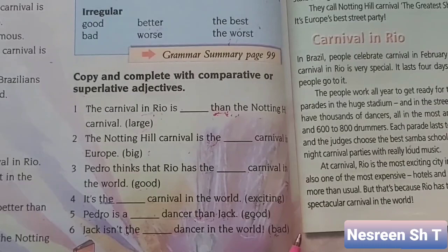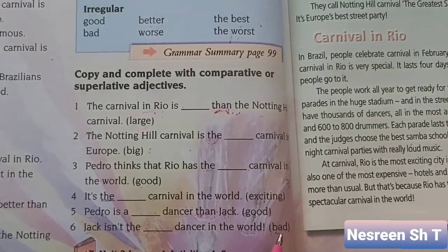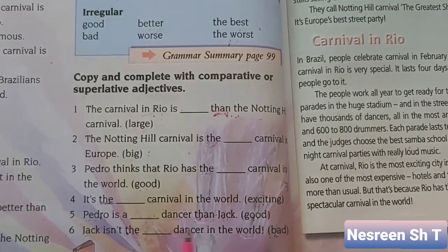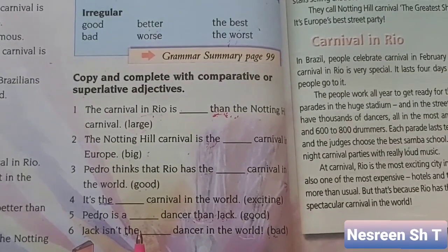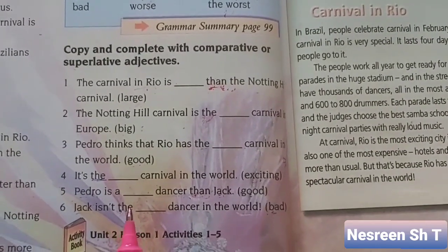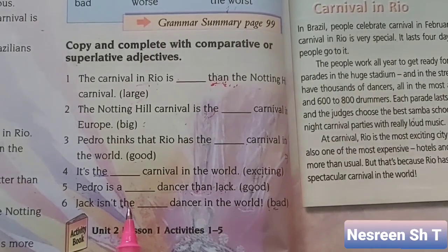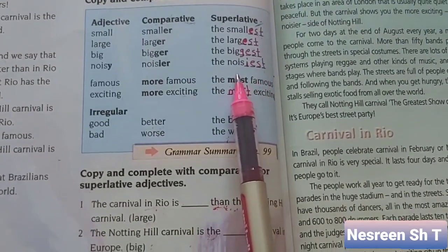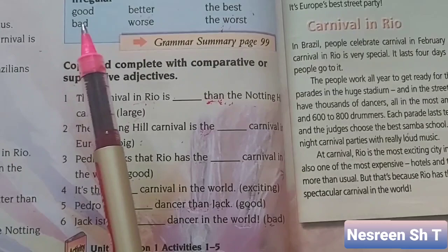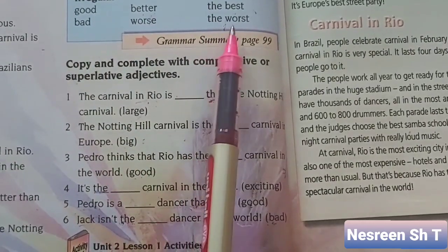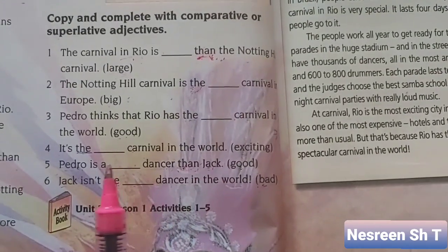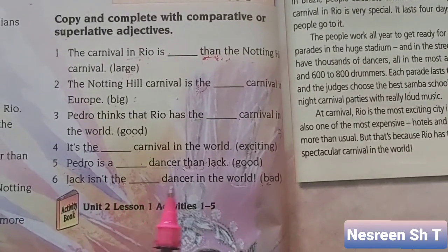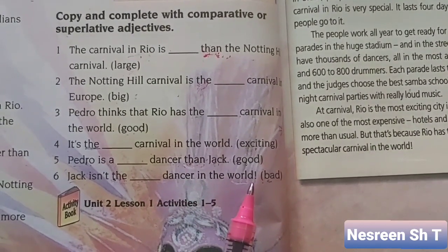Number six: Jack isn't the ___ dancer in the world. The adjective given is bad. Bad is an irregular adjective; its superlative form is the worst. Jack isn't the worst dancer in the world.